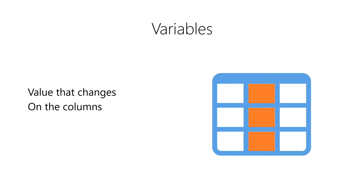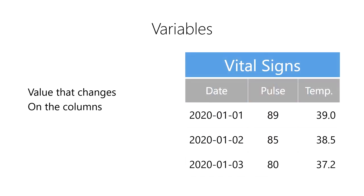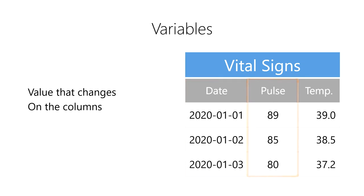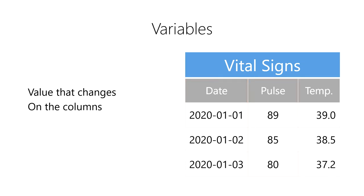Columns are the vertical groups of data that are contained within the table. For example, imagine we're recording the vital signs for a patient at a hospital. Our variables might be the date and time of the observation, the patient's heart rate measured by their pulse, and their body temperature at the time of the observation.